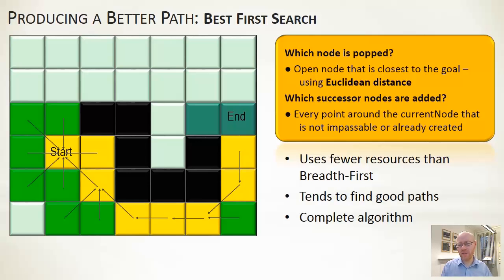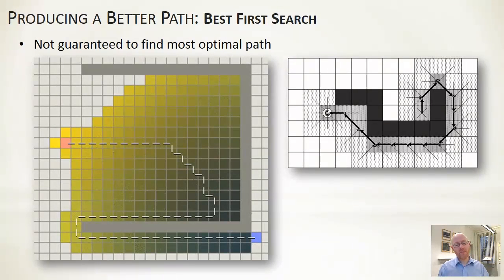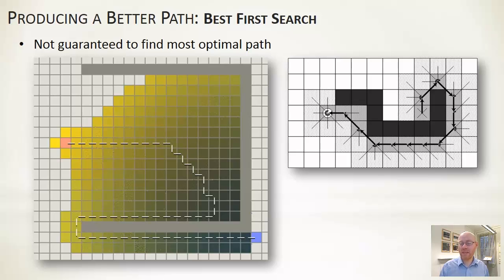Best-first has some problems. Because we head straight towards the goal, we may head into a corner before realising there's a wall, and then have to backtrack. In other cases, heading straight leads us around a wall in the wrong direction, when going a different way would have reached the destination faster. Because we're heading straight towards the target, the decisions we make are sometimes not optimal.